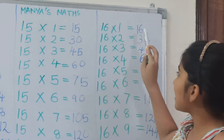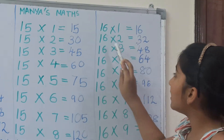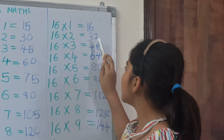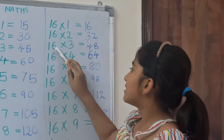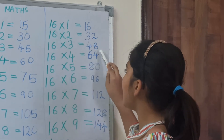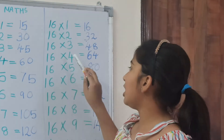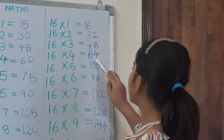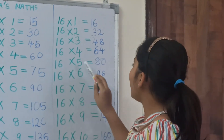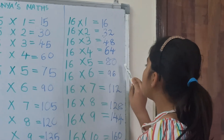16 1's are 16, 16 2's are 32, 16 3's are 48, 16 4's are 64, 16 5's are 80.